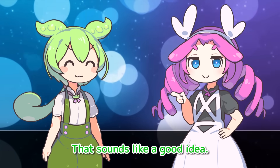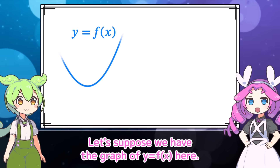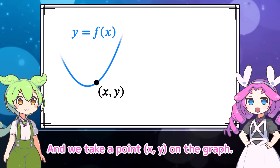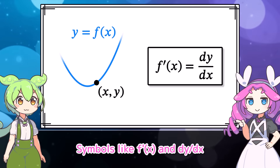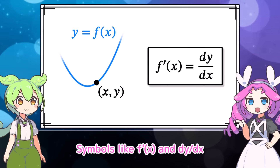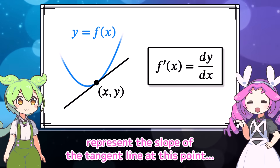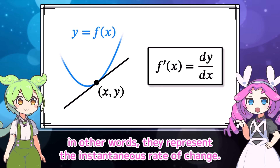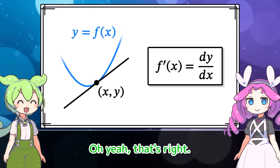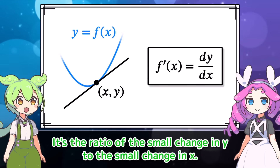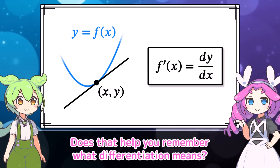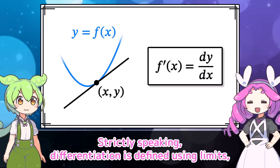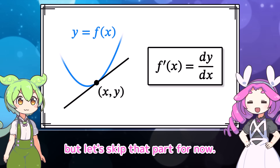Let's suppose we have the graph of y equals f of x here, and we take a point (x, y) on the graph. Symbols like f prime of x and dy by dx represent the slope of the tangent line at this point. In other words, they represent the instantaneous rate of change — the ratio of the small change in y to the small change in x. Strictly speaking, differentiation is defined using limits, but let's skip that part for now.